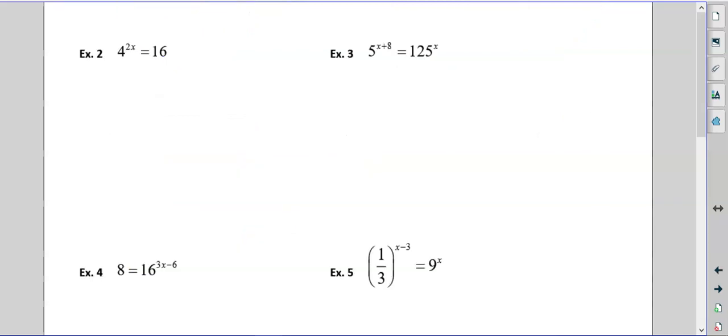So, notice here. I can rewrite 16 with the same base of 4. I can rewrite this as 4 squared. So this stays the same. And this is simply 4 squared. 16 is 4 squared. Once I have the same base, that's it. 2x equals 2. x equals 1. And again, I could plug that in and check it. 2 times 1 is 2. 4 squared is 16. I'm good to go.